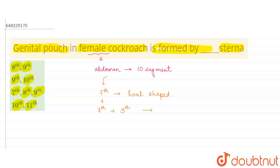And also the interior part consists of female gonophores, spermathecal pores, and collateral glands. So therefore we can say that 7th, 8th, and 9th all together form the genital pouch, and these are actually the sterna.